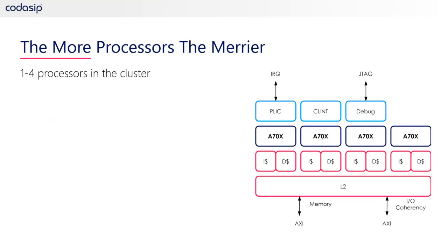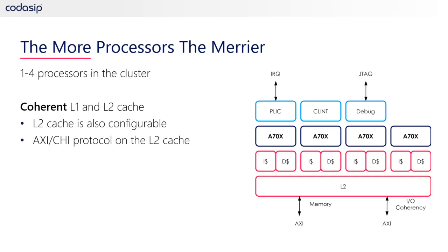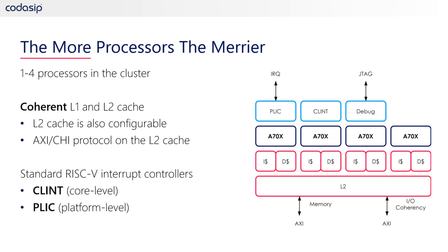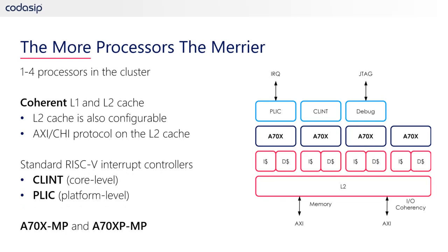Now let's get to multiprocessing. Our solution supports clusters with up to four processors in a symmetric multiprocessor configuration. The system will come with configurable L1 and L2 caches and standard interfaces. The standard RISC-V interrupt controllers will also be supported. Based on required SIMD support, two solutions will be available: the A70XMP and the A70XP-MP. These new additions will be available in the first quarter of 2021. For more details, check the press release on our website.